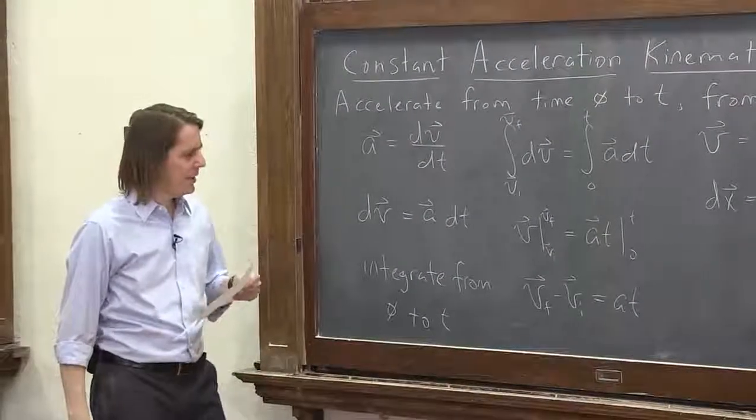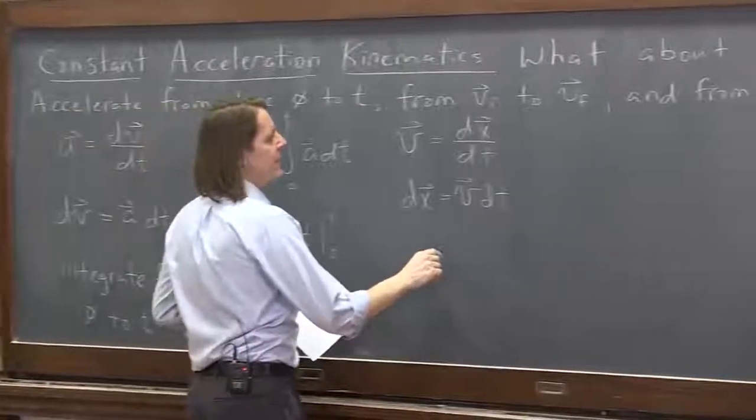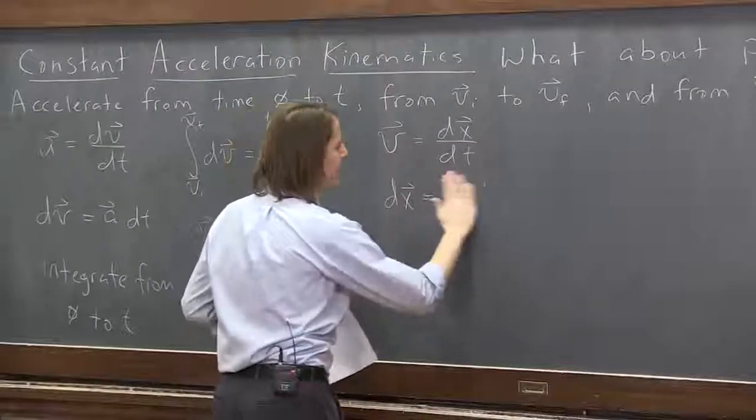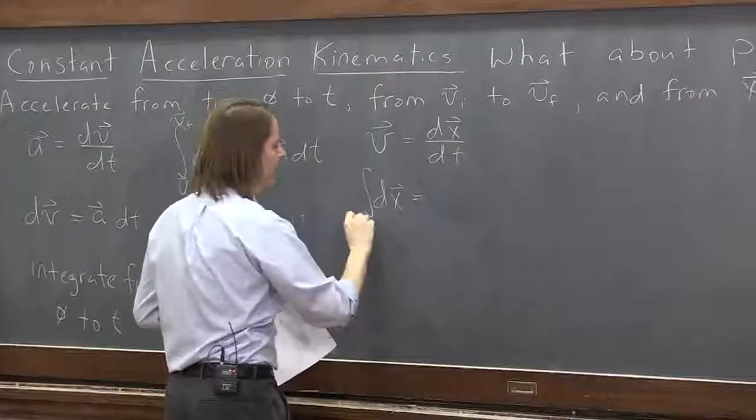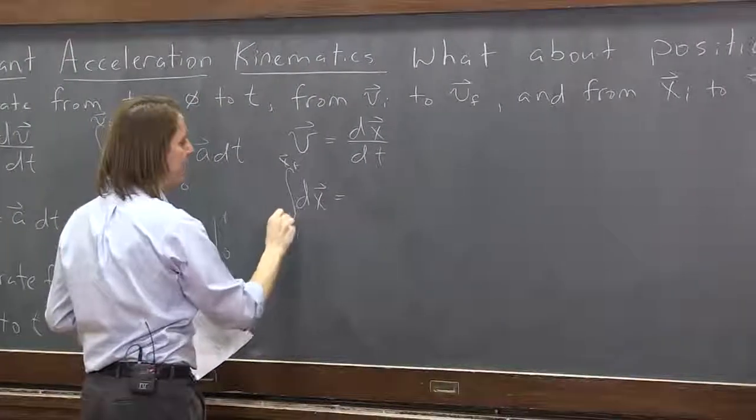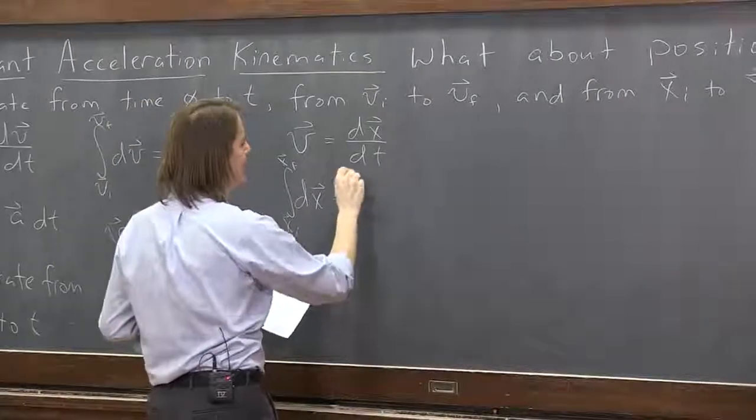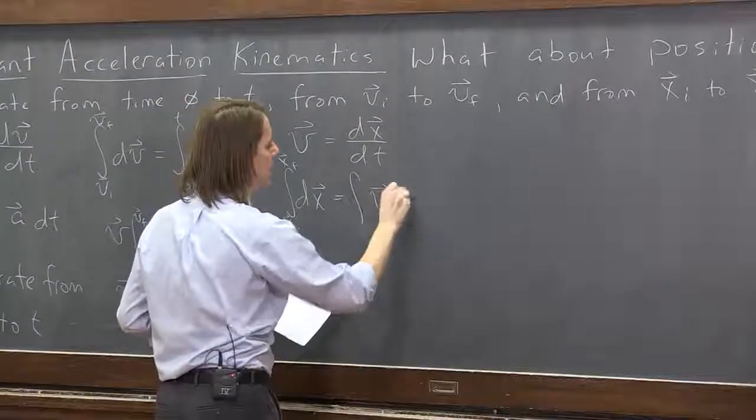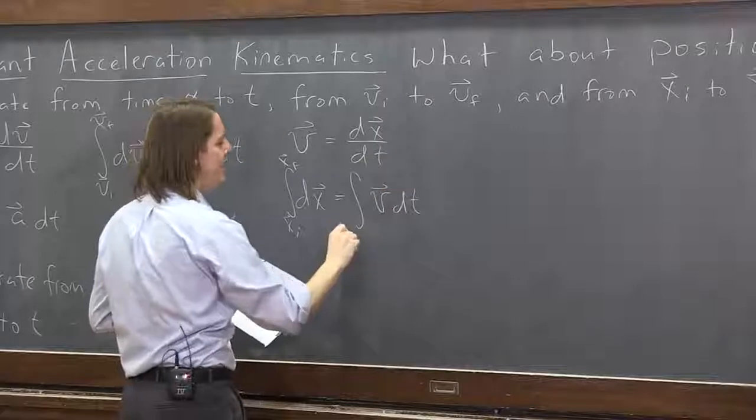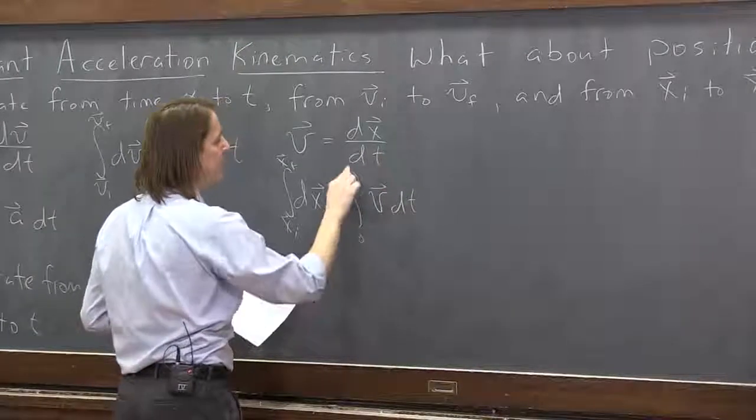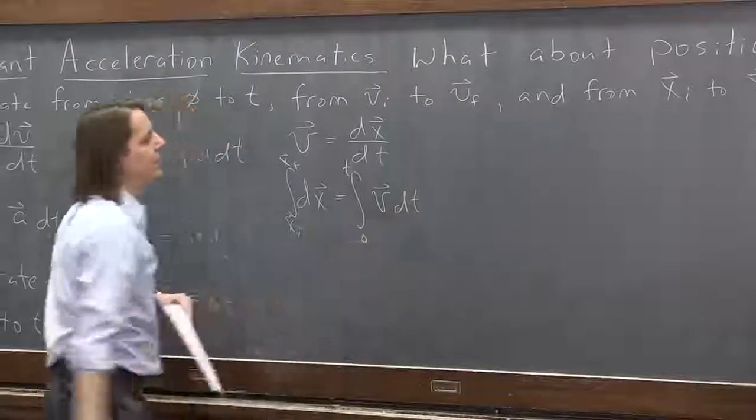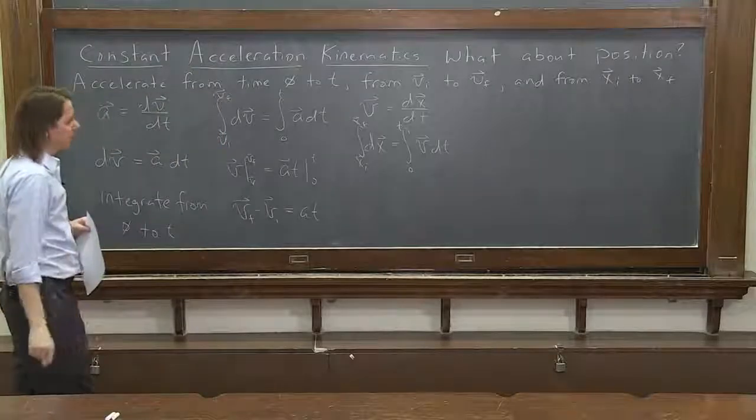And what we're going to do is integrate it. And in this case, I could have left myself a little more room. We're going to integrate dx from where? Xi to xf. And vdt we're going to integrate from what? From vi to vf. I'm sorry, we're doing d. From 0 to t. Integral over t. All right. OK.